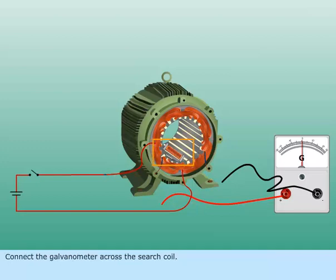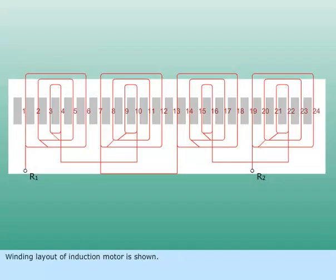Connect the galvanometer across the search coil. Winding layout of induction motor is shown.